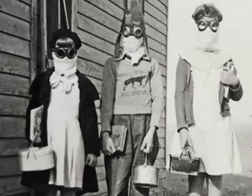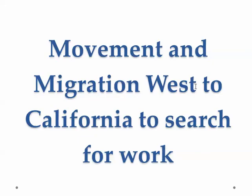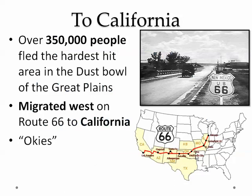So that's the Dust Bowl and what caused it: the dryness, drought, wind, over-farming and overproduction that removed the buffalo grass and moisture, causing the land to erode. Movement and migration west to California in search of work is extremely important. After the Dust Bowl, people picked up from Oklahoma — these Okies — and took Route 66 all the way out to Los Angeles. They called California the land of milk and honey, but when they got there they wouldn't find much — just Hoovervilles and no jobs.